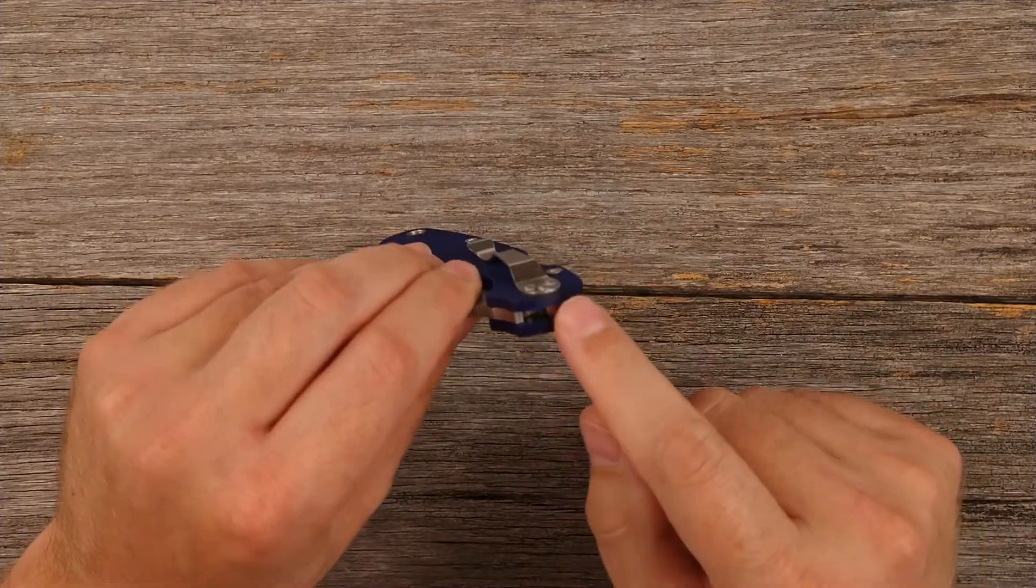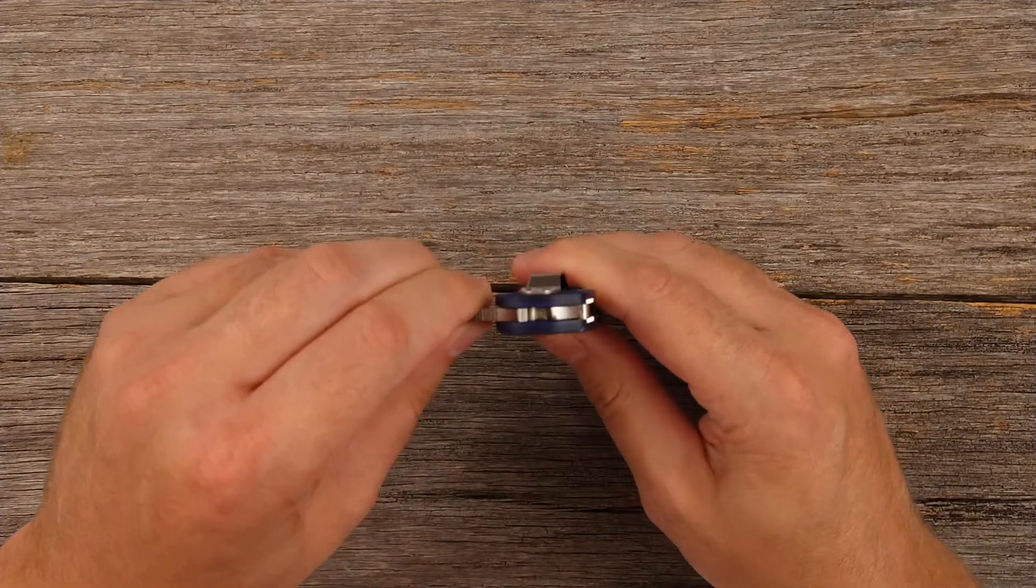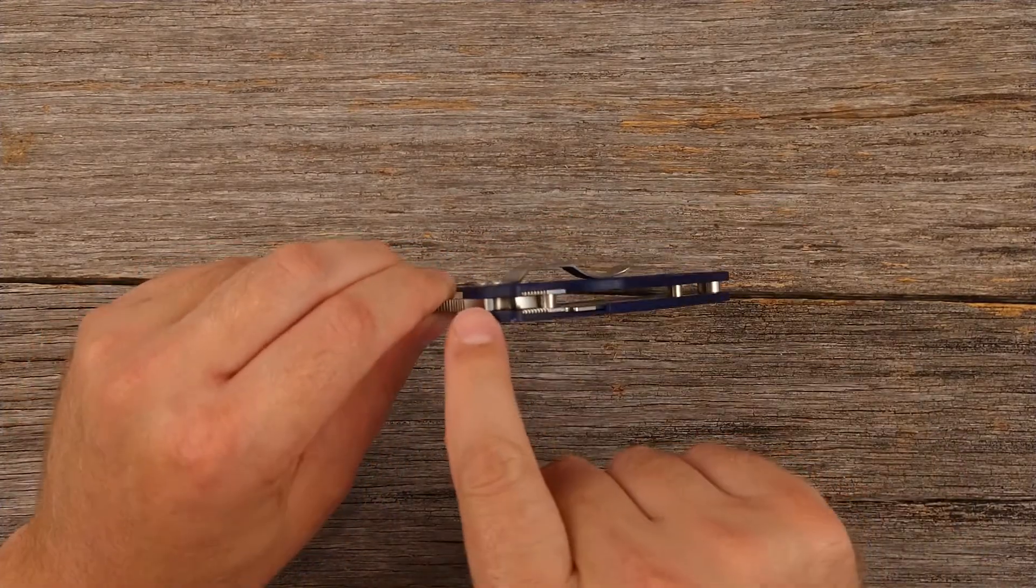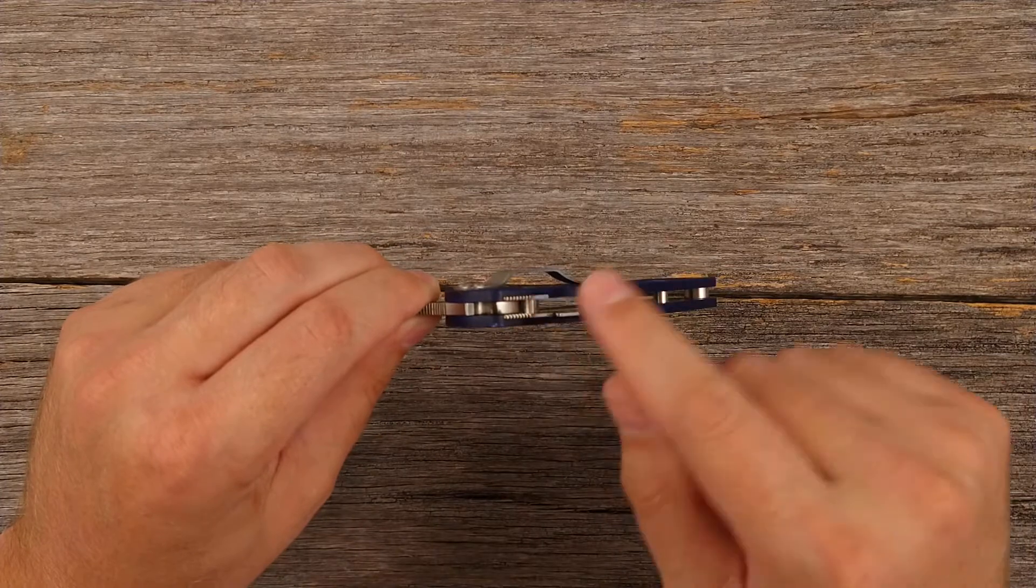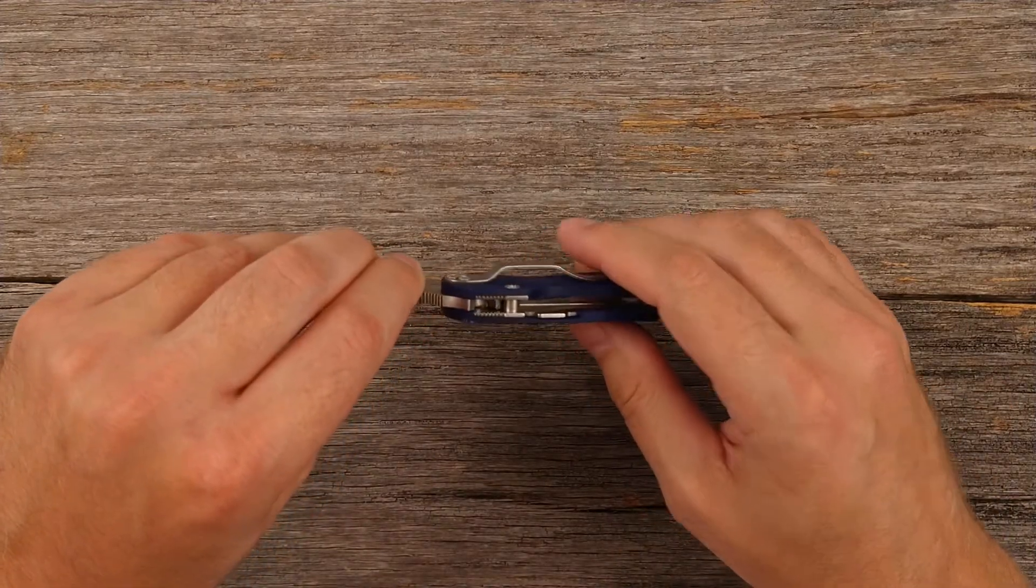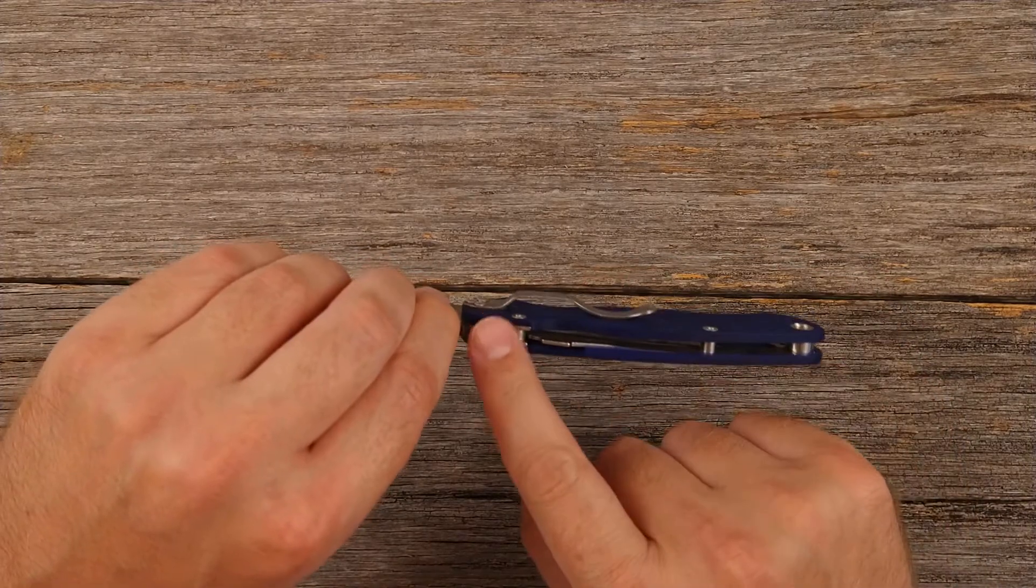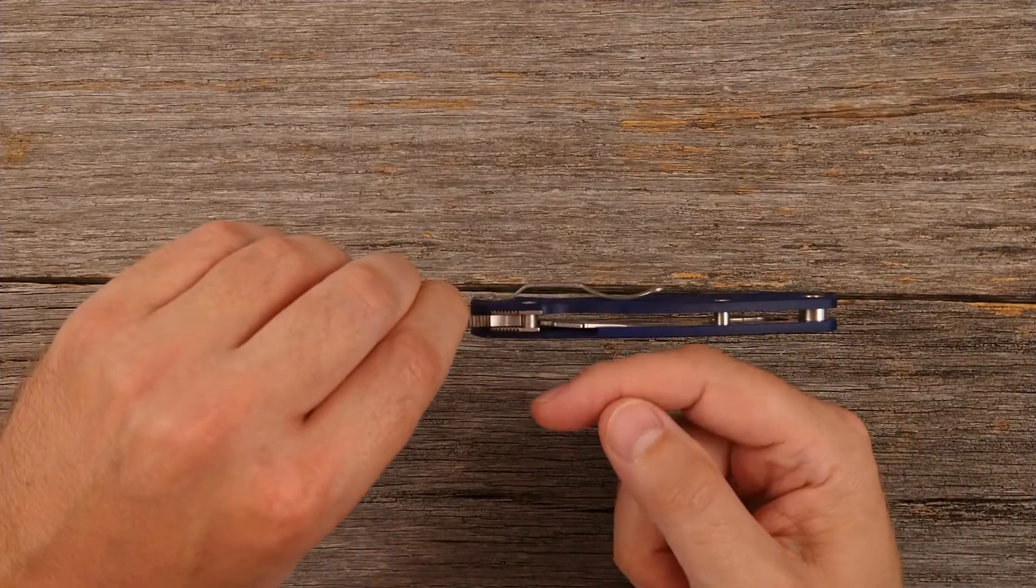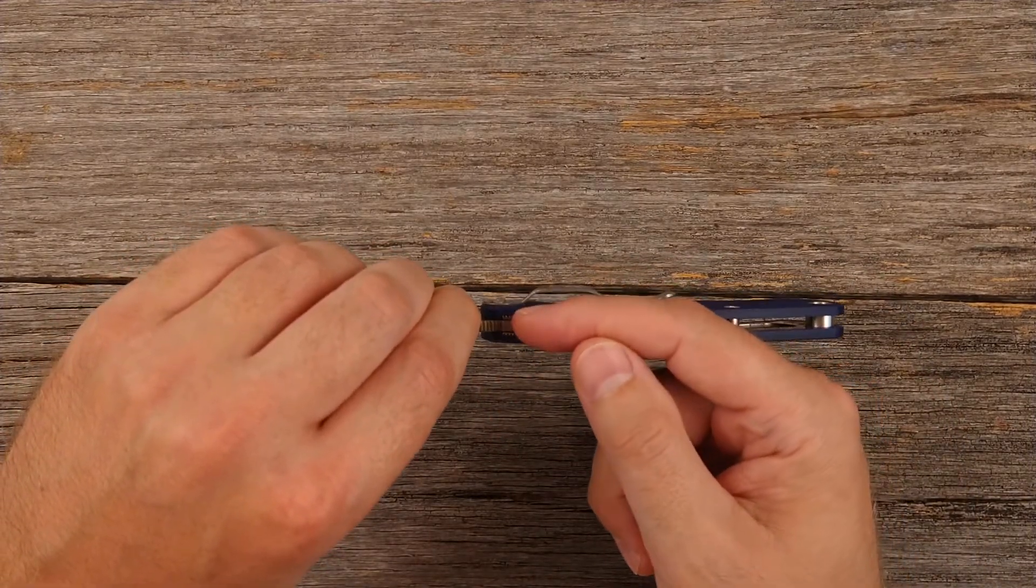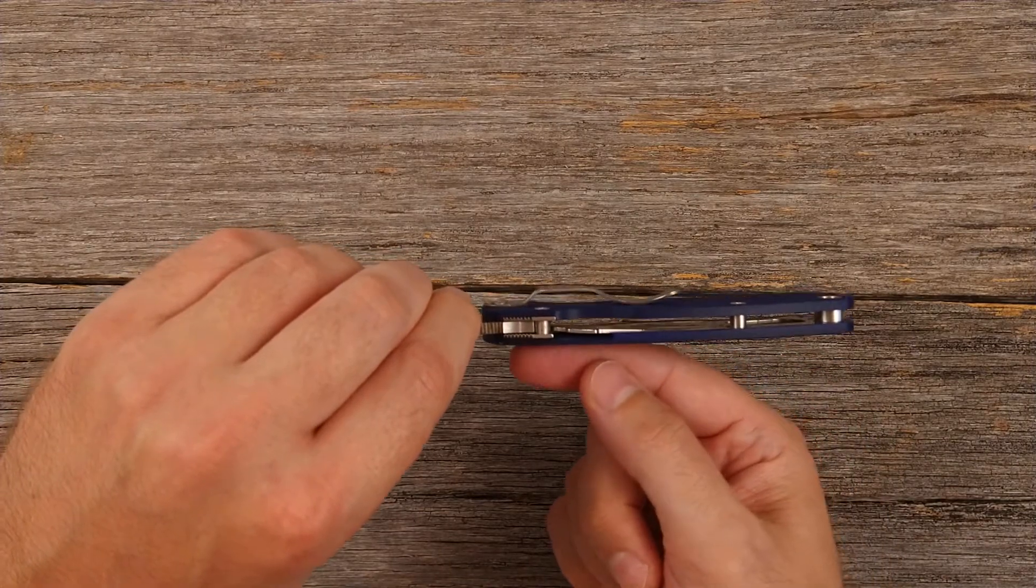What happens is as this rotates, this flat part of the blade here is going to butt up against the stop pin. And then that liner in there is going to flick open into that channel in the blade. And so what it does is it actually wedges that liner between the stop pin and the blade itself, that notch in the blade.